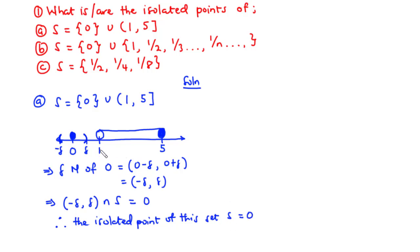For the interval between 1 and 5, for any value in this interval, including 1 and 5 as endpoints, the delta neighborhood of each value intersected with S gives a set containing infinitely many points. Therefore, no value in the interval can be an isolated point of S. The closed interval [1, 5] contains the limit points of S, while 0 is the isolated point of this set.